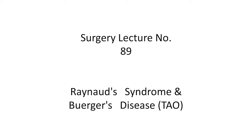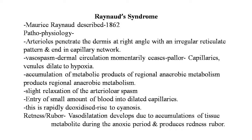Raynaud's syndrome was first described by Maurice Raynaud in 1862, hence called Raynaud's phenomenon; it is a primary disorder. The pathophysiology: arterioles penetrate the dermis at right angles in an irregular reticulate pattern and end in a capillary network. Dermal circulation momentarily ceases, producing pallor. Capillary venules dilate due to hypoxia of the upper limbs and accumulation of metabolic products from regional anaerobic metabolism.